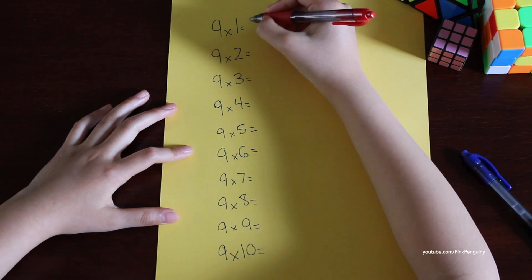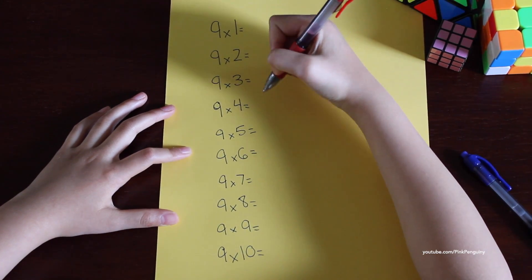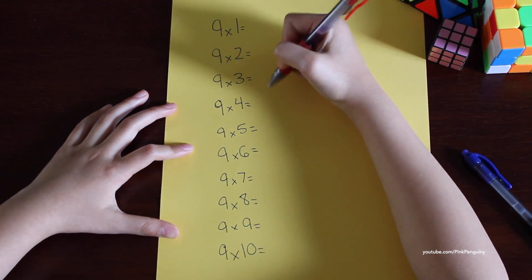So now I'm going to write zero, one, two, three, all the way to nine.